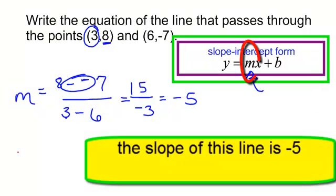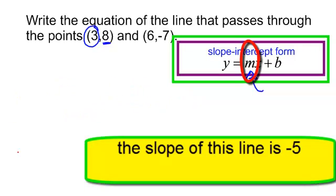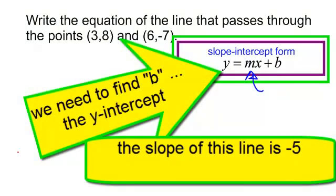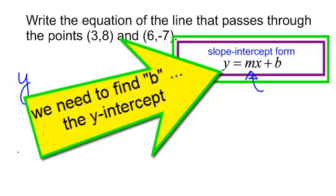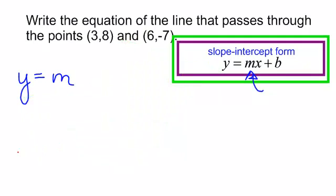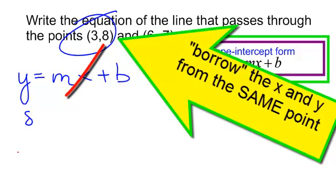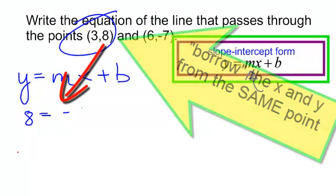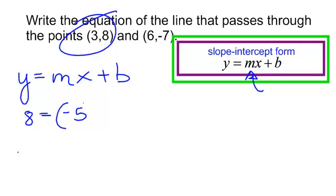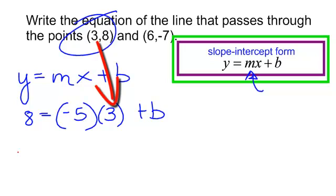I will put negative 5 in for the slope, but I do not have the y-intercept. We need to find little b, the y-intercept. Here's the formula: y equals mx plus b. Now I'm going to borrow an x and a y — I'll just use the point (3, 8). So y is 8, and that equals my slope, negative 5, times x, which is 3, plus b. I've plugged in my slope and I'm going to search for b.